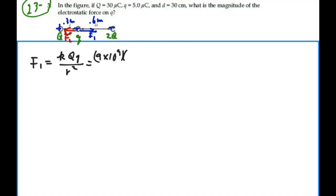9 times 10 to the 9 times q, which is 30 microcoulombs, times little q, which is 5 microcoulombs, over the distance between them, which is 0.3 meters squared.